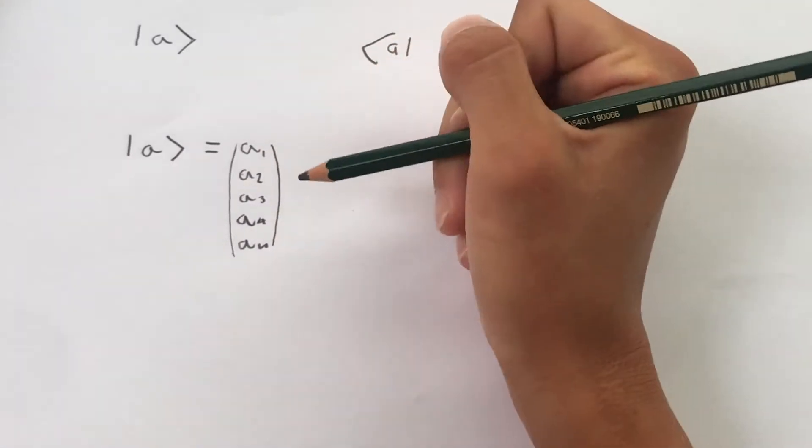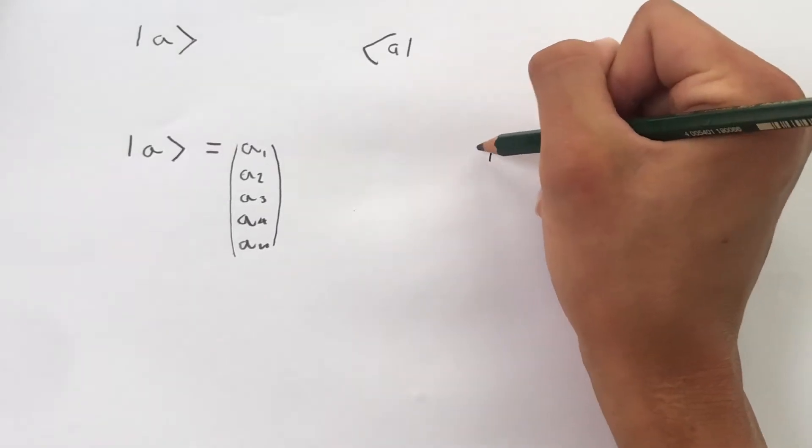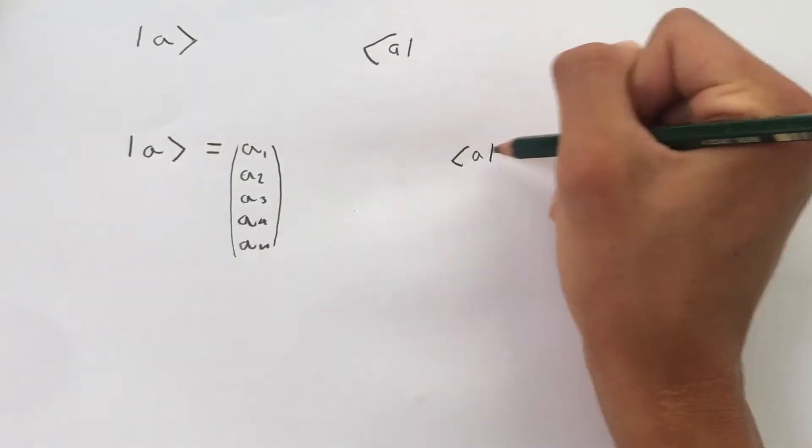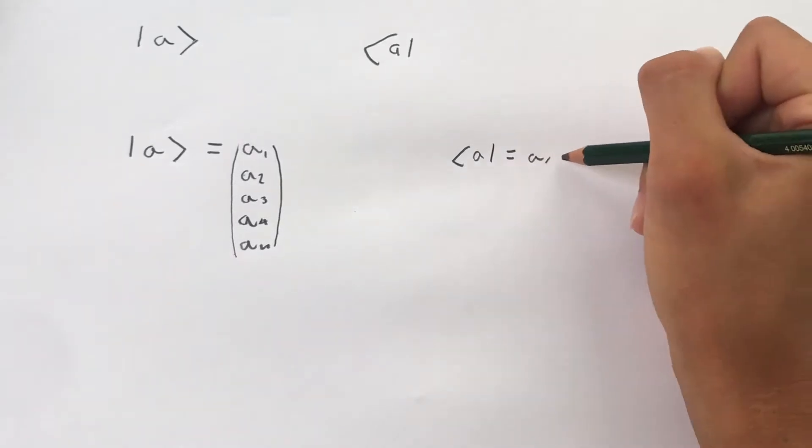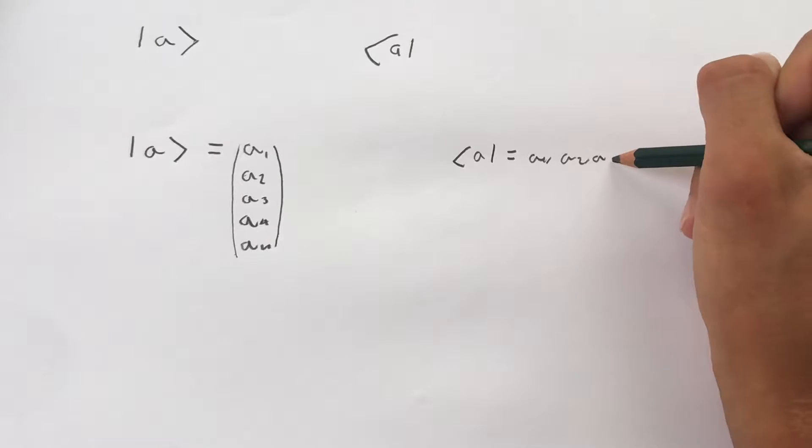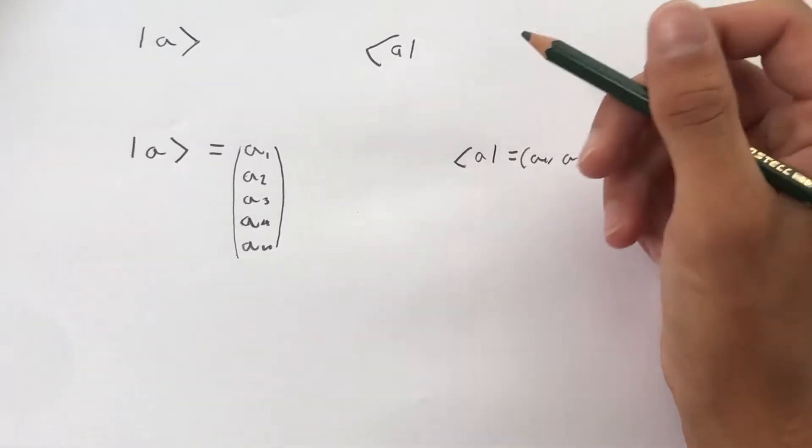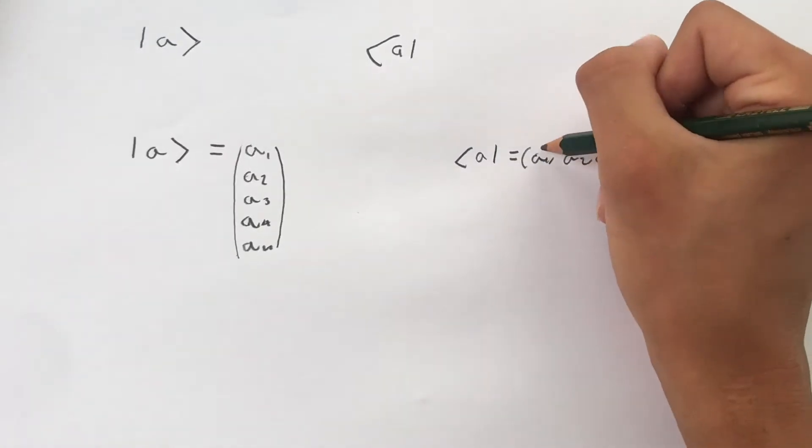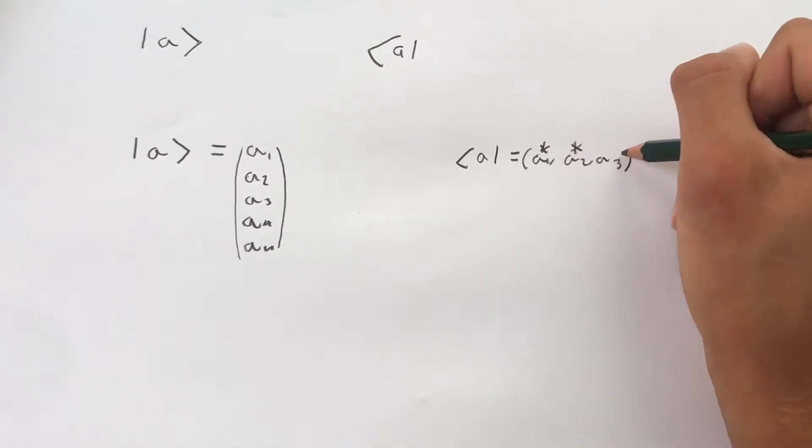So it's a column vector. And then the bra vector, that looks like this, is simply a1, a2 and a3, written out in this manner. But what is important to memorize is that these numbers now are complex conjugated. And I will get into more detail what that means in a second.